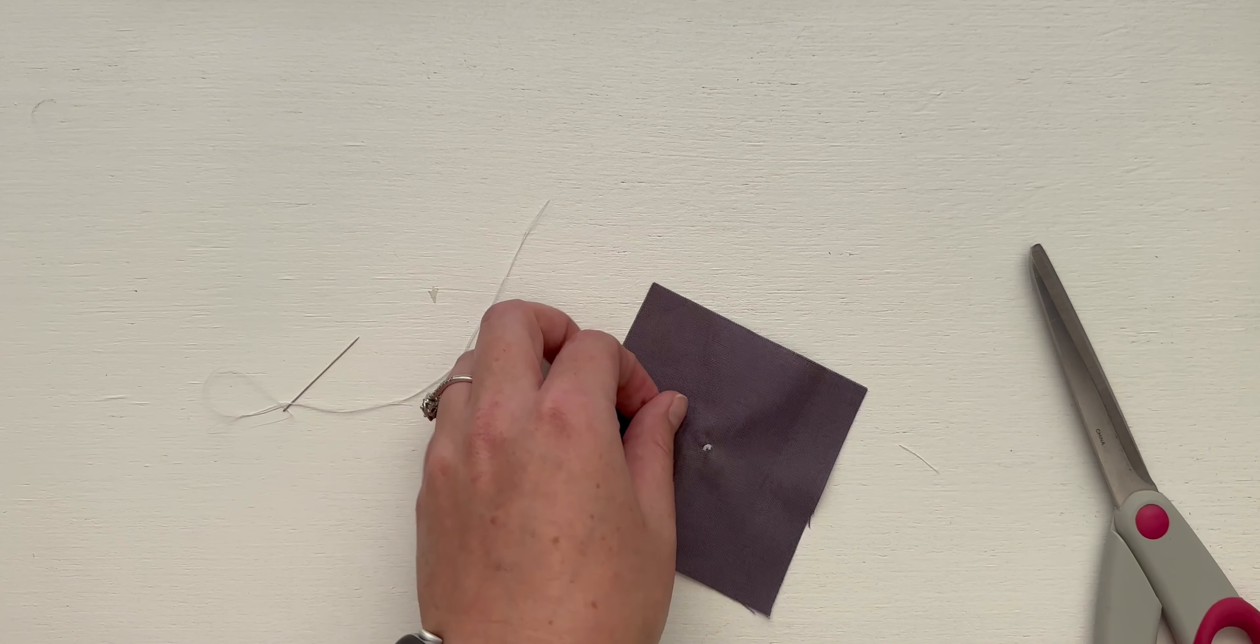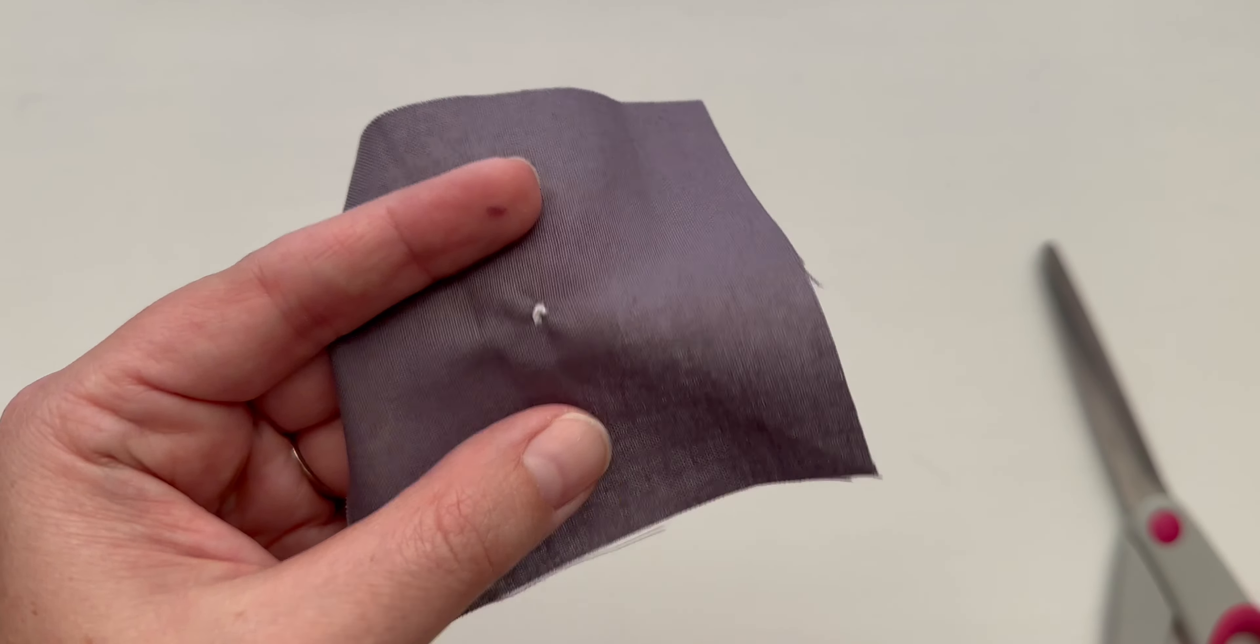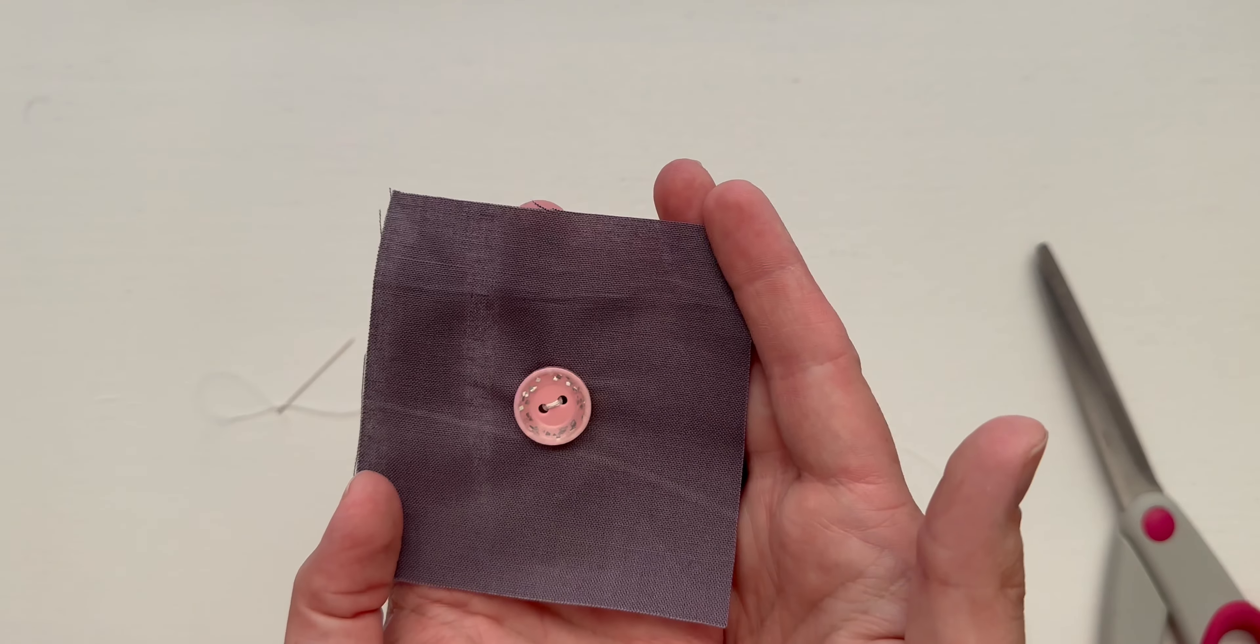Be very careful not to cut off your ending knot, but then you have a two-hole button.